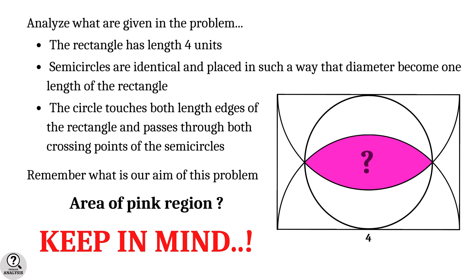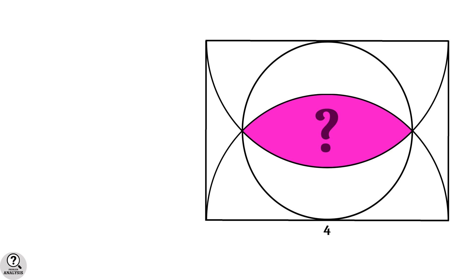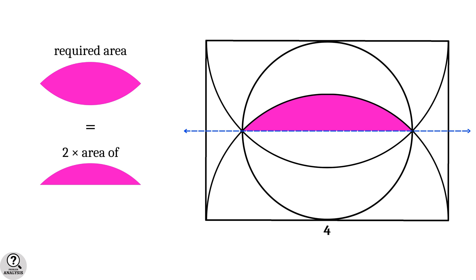Now observe the figure. Note that it has a horizontal symmetry, so the required area can be calculated as two times the area of one horizontal half. Thus we need to find the area of this horizontal half.